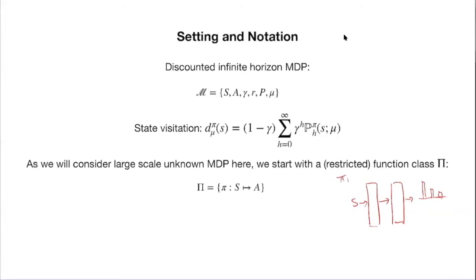A deterministic policy is a special case where the output is a delta distribution — probability one on one action and zero elsewhere. The policy class could contain all possible two-layer feedforward neural networks, or all decision trees of depth 10. Think of each policy as a classifier: the feature is the state x and the labels are the actions.